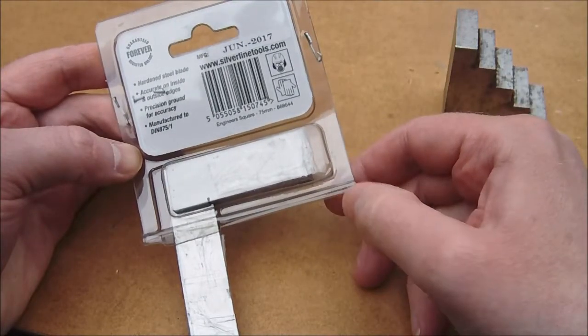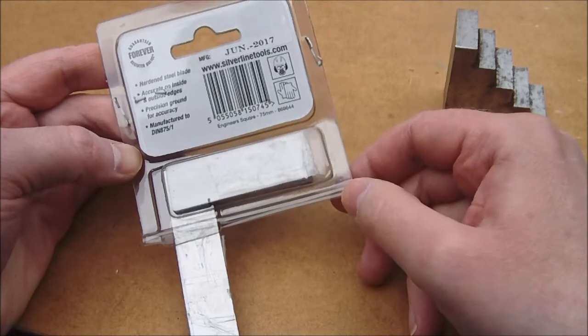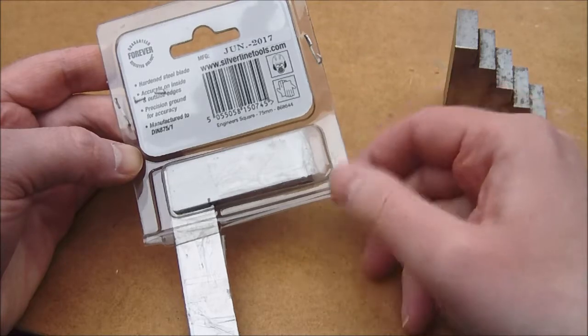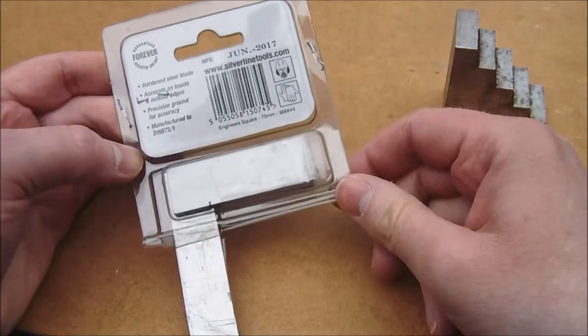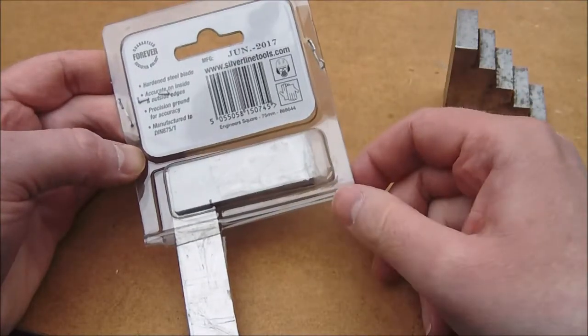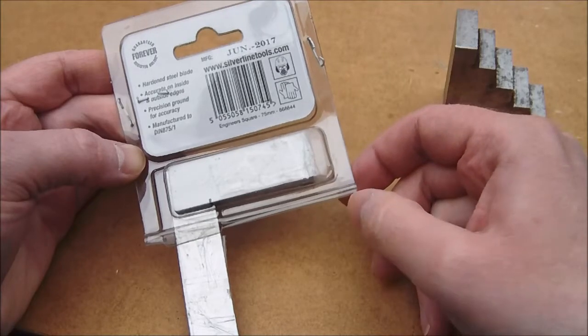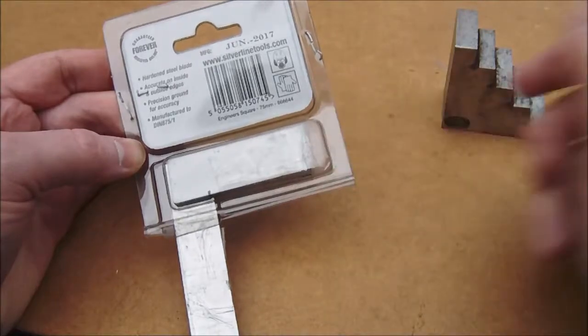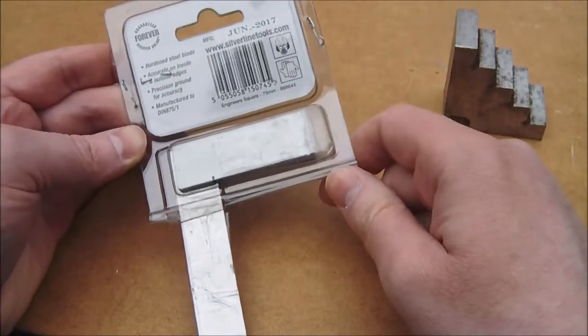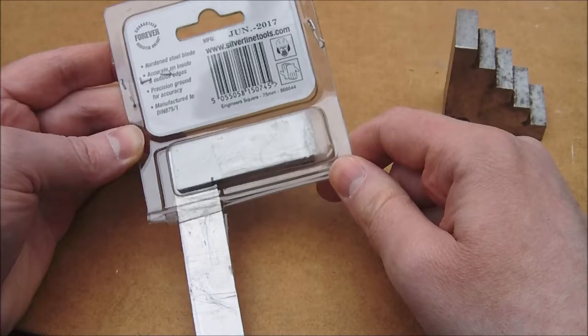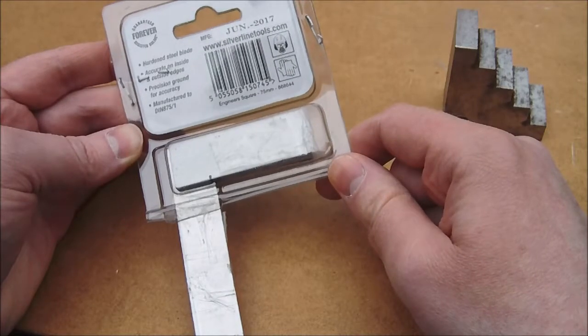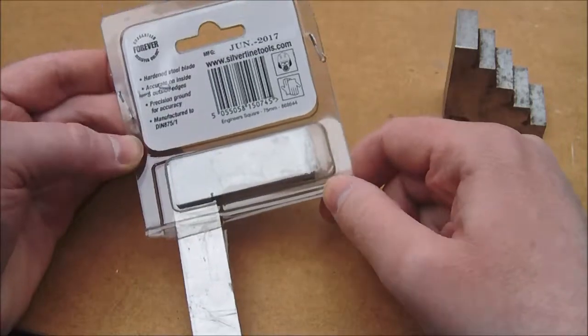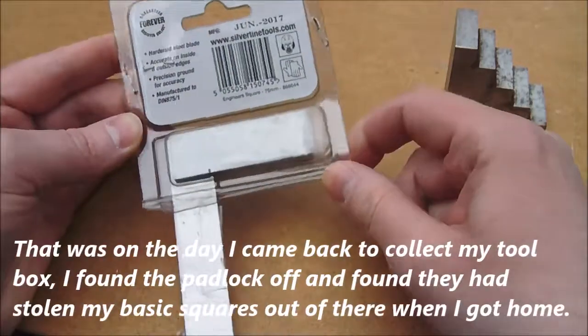I did talk before about one of my work toolboxes kept being broken into. The general basic squares were one of the things that went missing. I did still have my combination square, which can also be used as a regular 90 degree engineer square, which is what I generally tended to use anyway, so that kind of slipped by me.